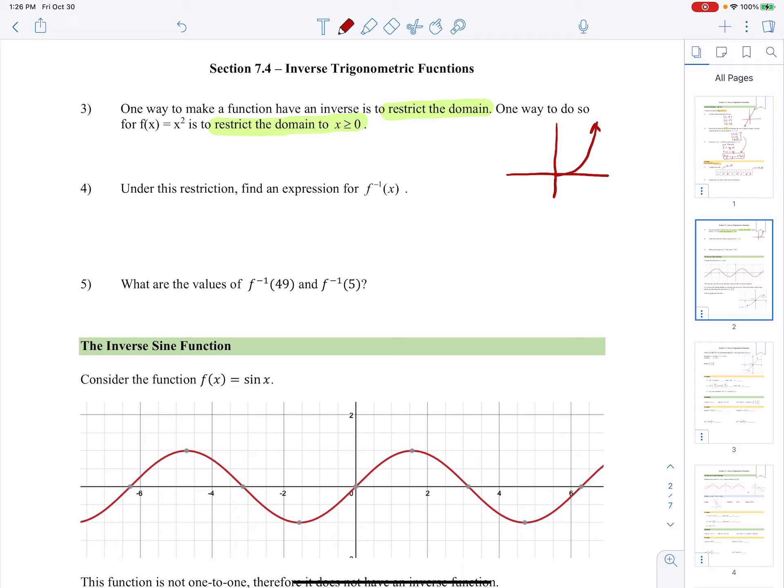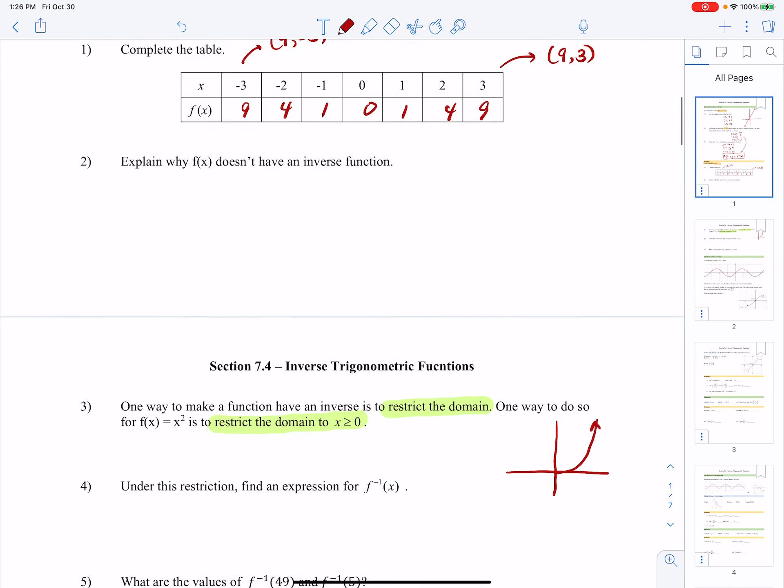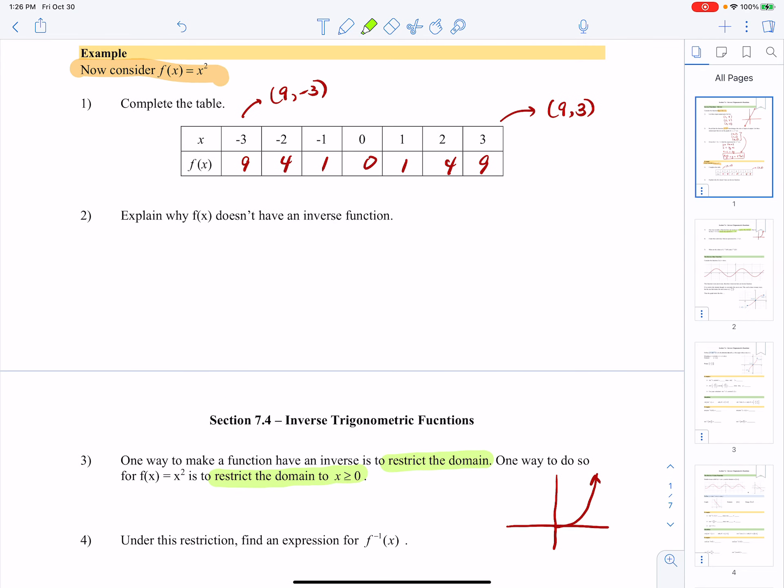So with that in mind, now I can safely say for any value of x, I'm only going to correspond to one value of y and the inverse will be a function. Because what's going to happen on my part where x is greater than or equal to 0, I'm only dealing with this piece, which means there's no chance of a repeat.